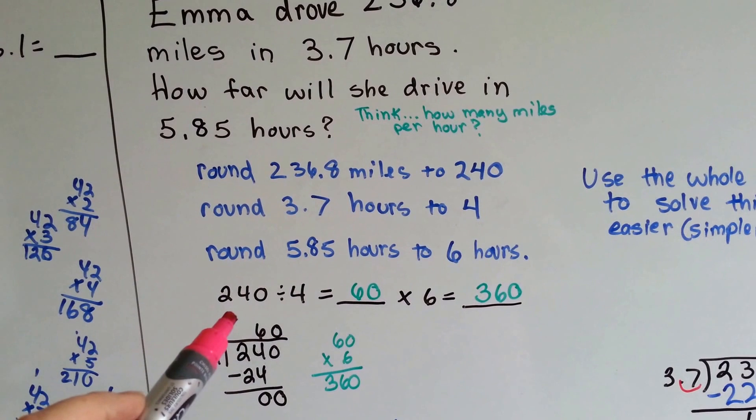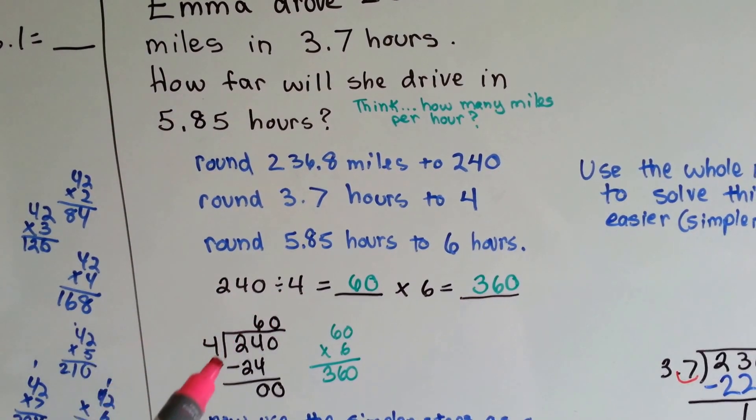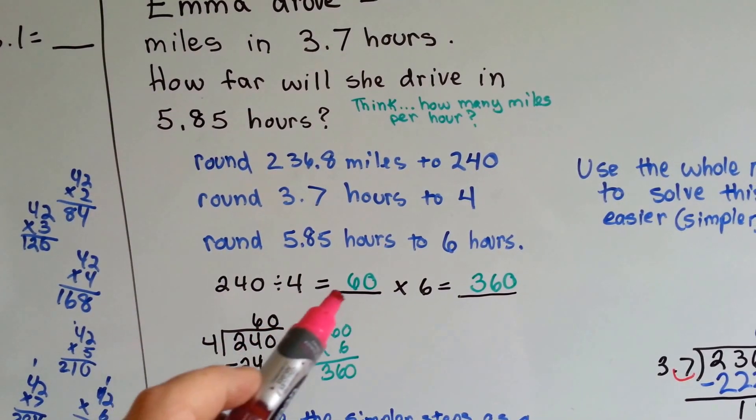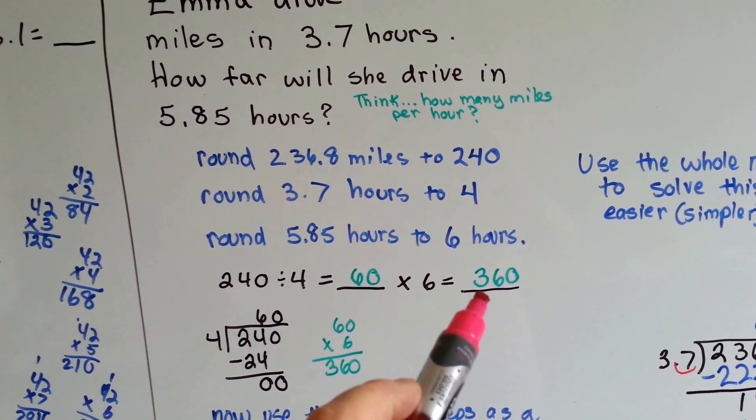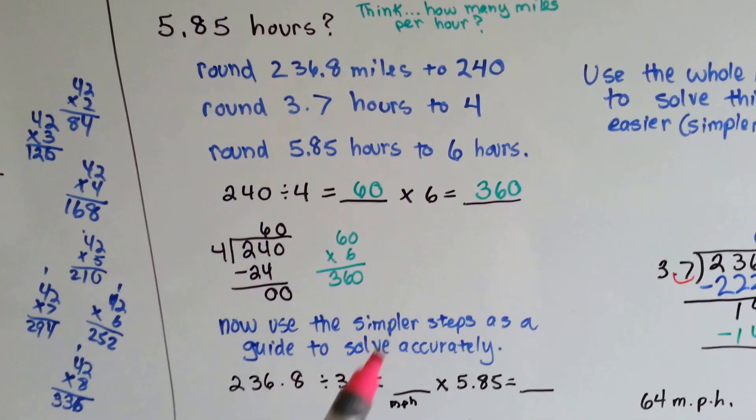If she drove 240 miles in 4 hours, when we divide it, we get 60 miles per hour. In 6 hours, that would be 360 miles. Now we have a guide.